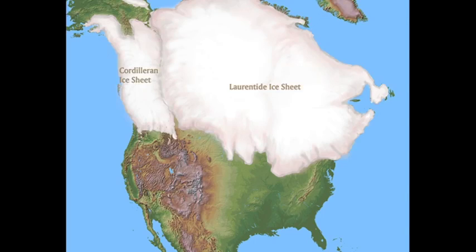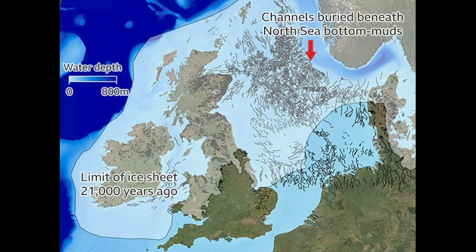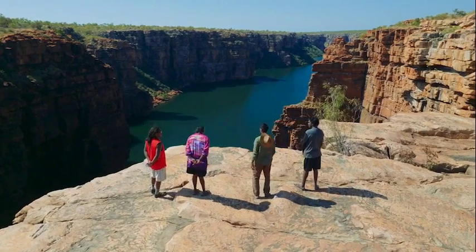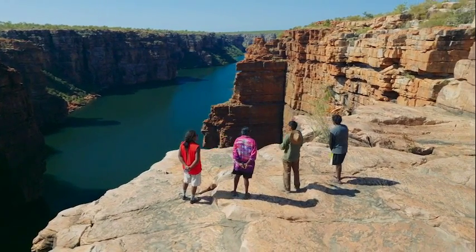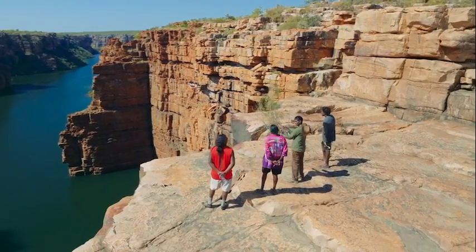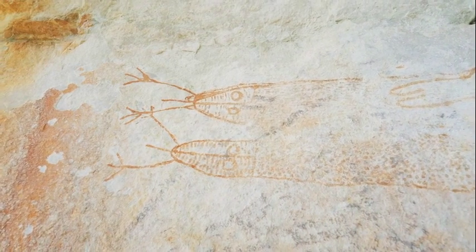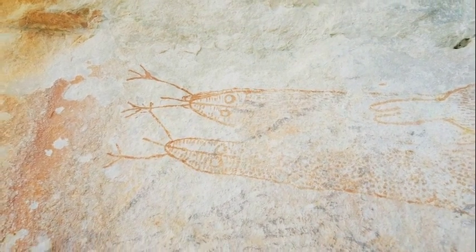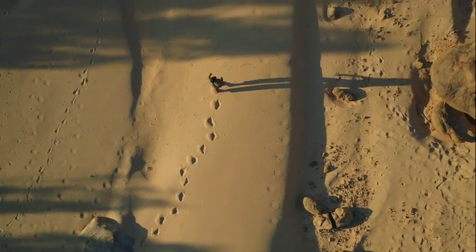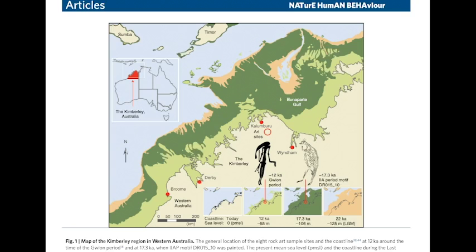Then by about eighteen thousand years ago, the great ice caps in the northern hemisphere — on North America and Scandinavia and Britain and Siberia — began to melt. And as they melted, all of that water which was locked up on land made its way into the oceans and sea levels globally rose by about a hundred and twenty to a hundred and twenty-five metres. So we now know that those paintings actually belong to the very beginning of that deep ice age conditions — a very different climate to what we have today. The land was much more extensive, sea levels were much lower and the shoreline was hundreds of kilometres offshore from where it is today in the Kimberley.